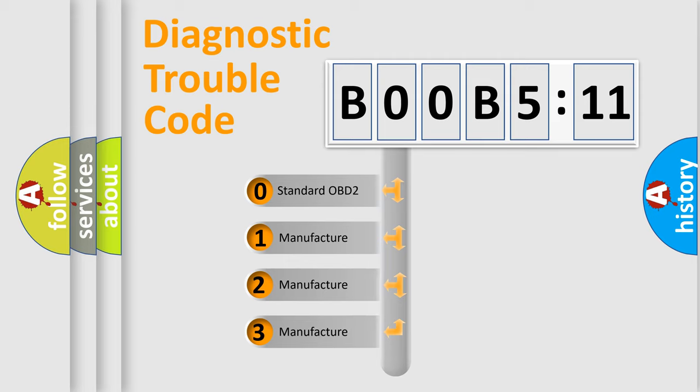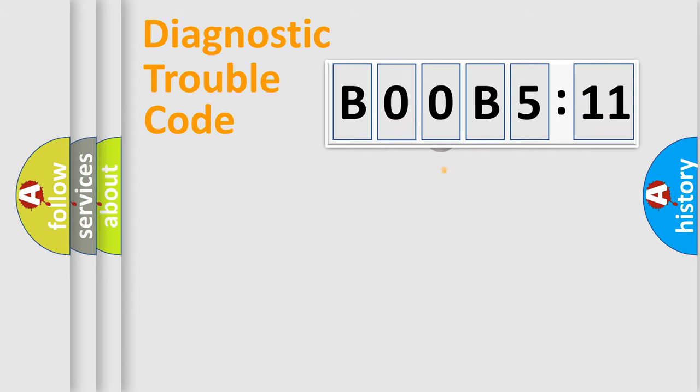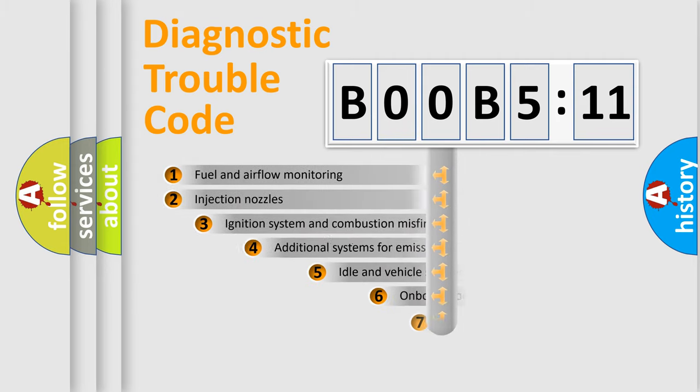If the second character is expressed as zero, it is a standardized error. In the case of numbers 1, 2, or 3, it is a more specific expression of the car-specific error.